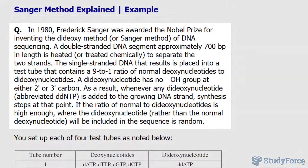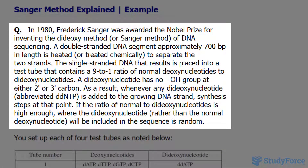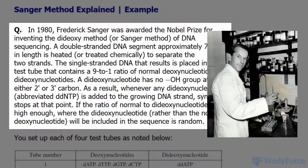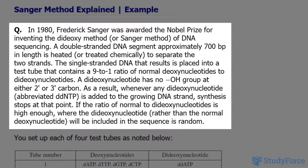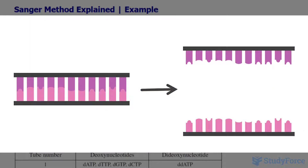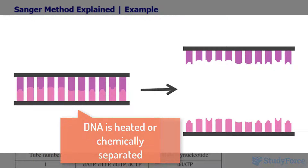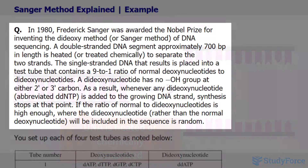The first question reads: in 1980, Frederick Sanger was awarded the Nobel Prize for inventing the dideoxy method, or Sanger method, of DNA sequencing. A double-stranded DNA segment, approximately 700 base pairs in length, is heated or treated chemically to separate the two strands. The single-stranded DNA that results is placed into a test tube that contains a 9 to 1 ratio of normal deoxynucleotides to dideoxynu­cleotides.